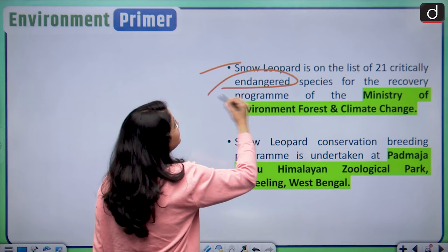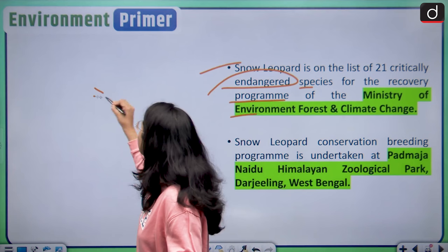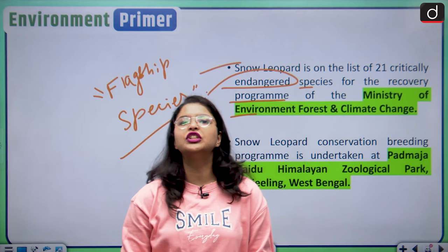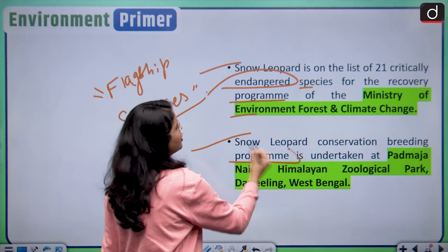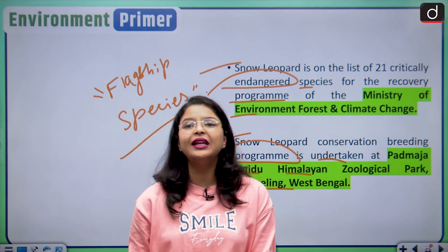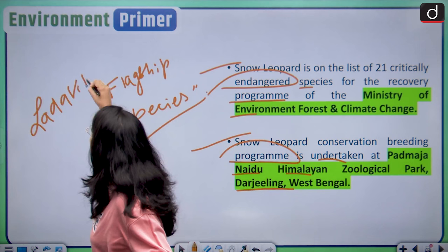Snow leopards are on the list of 21 critically endangered species for the recovery program of the Ministry of Environment, Forest and Climate Change. In fact, the snow leopard has been categorized as a flagship species to increase its conservation and protection efforts. A Snow Leopard Conservation Breeding Programme is undertaken at Padmaja Naidu Himalayan Zoological Park, Darjeeling, West Bengal. The Snow Leopard Capital in India is in the Union Territory of Ladakh.